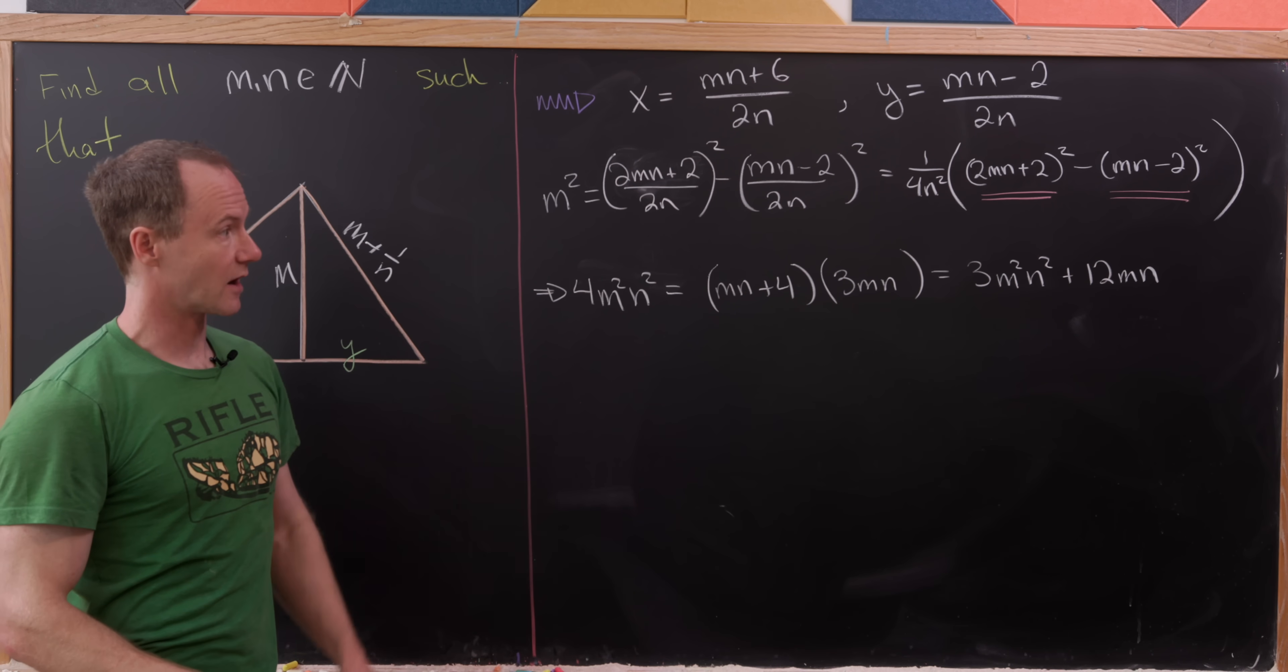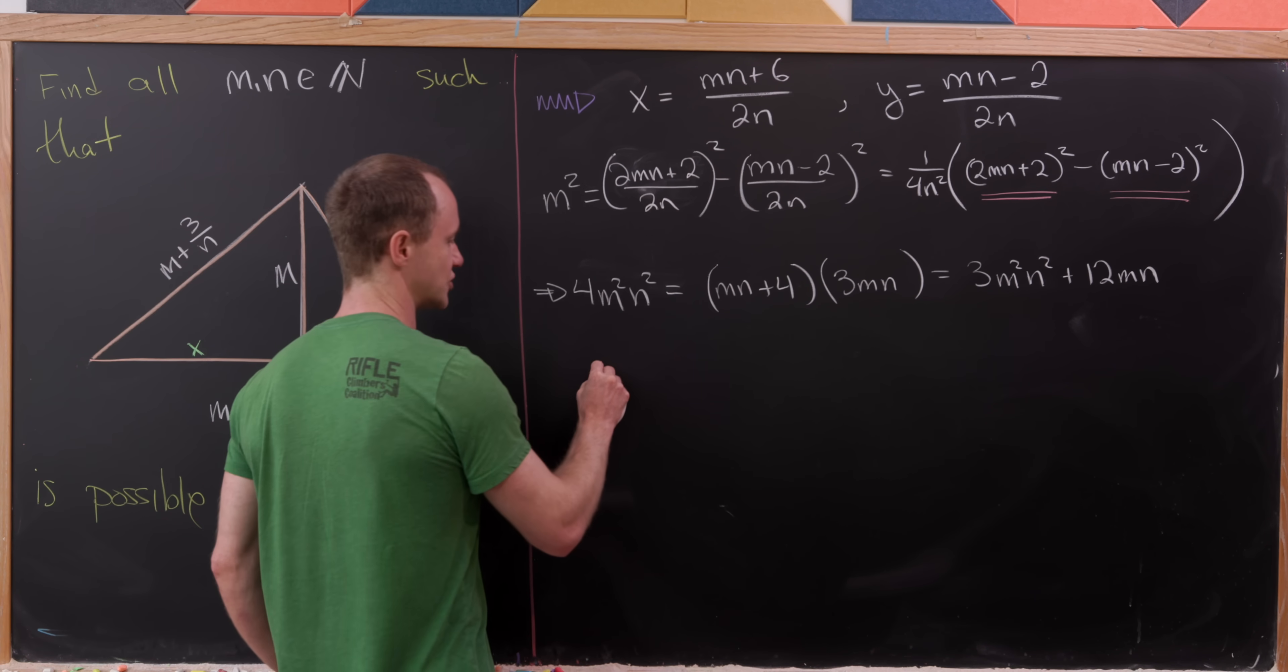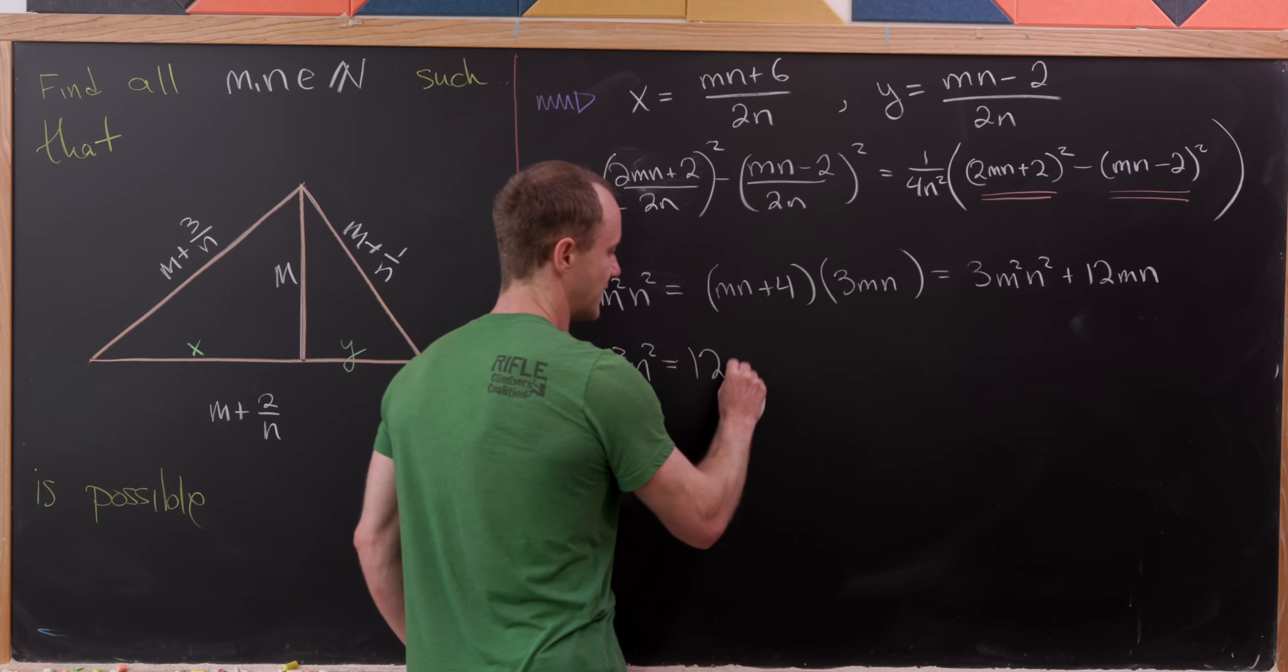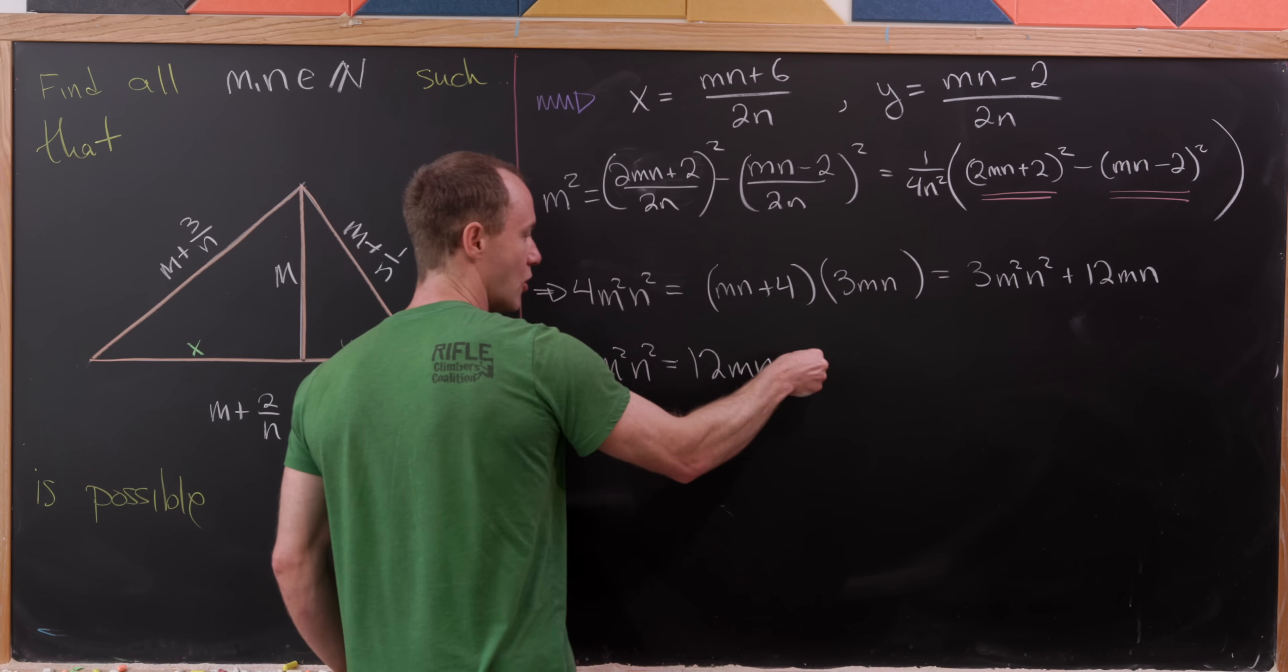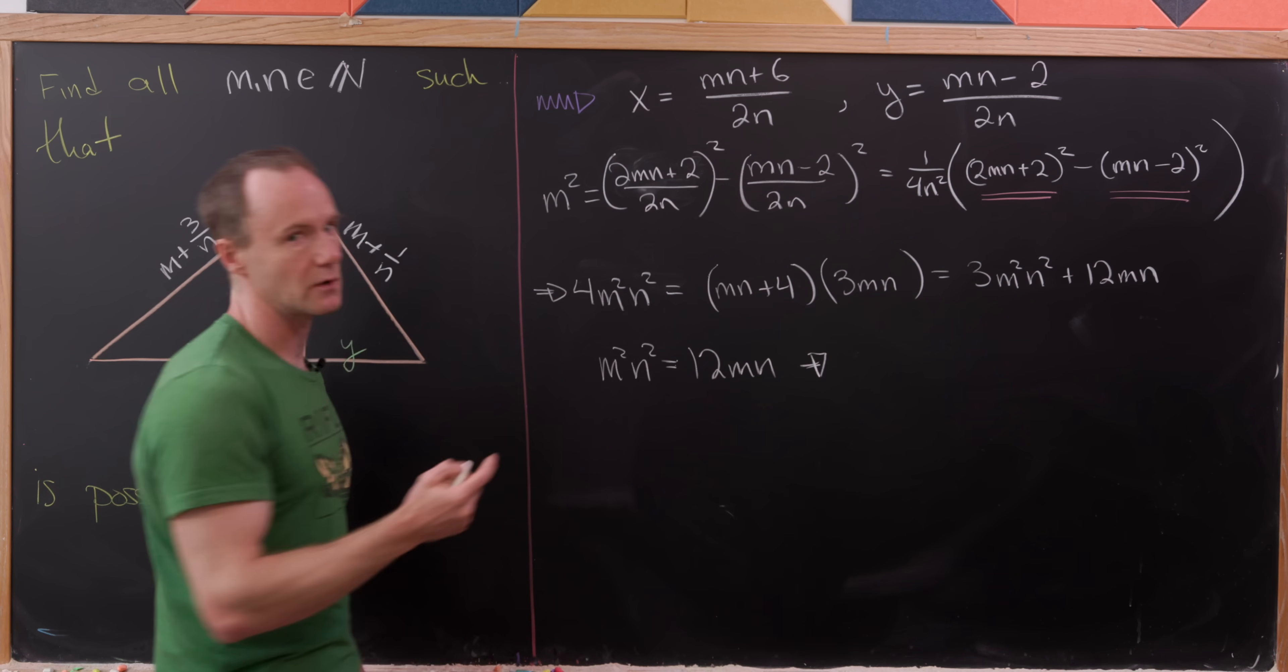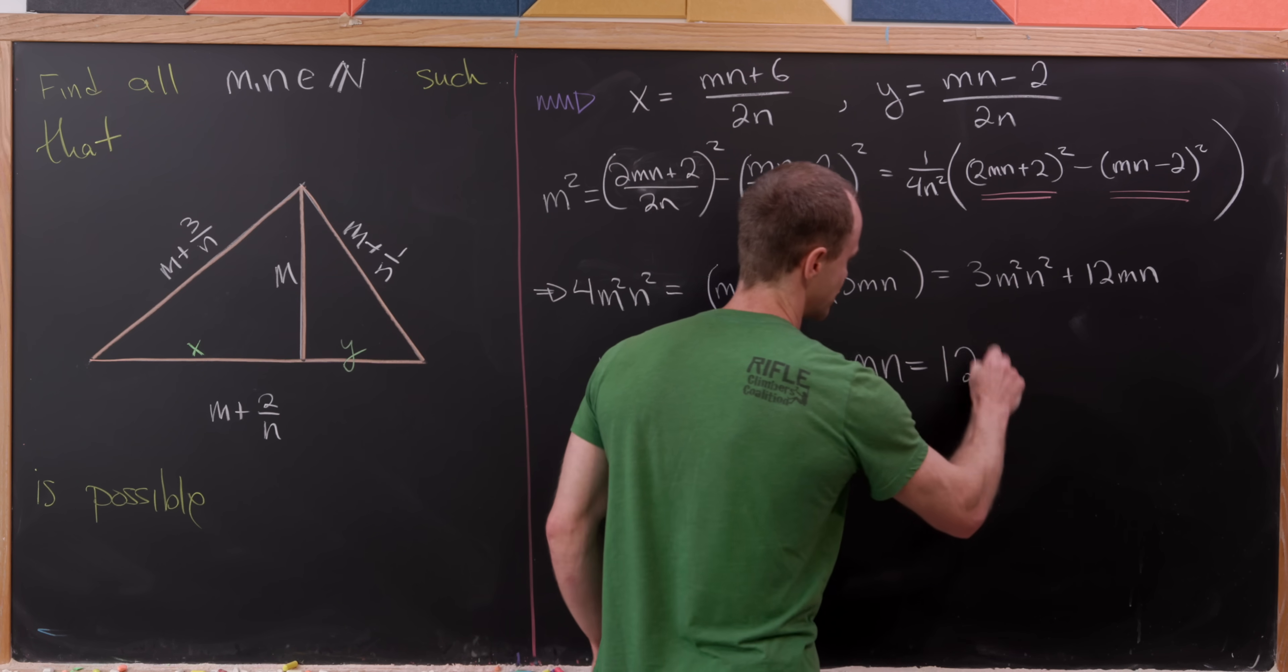So we're there. Now I'll take that 3 m squared n squared over to the other side of the equation and I'll see that I have m squared n squared equals 12 m n. But now we're pretty much home free. And observe now we can maybe divide both sides by m times n. We know neither m nor n is 0. And so that gives us m times n equals 12.